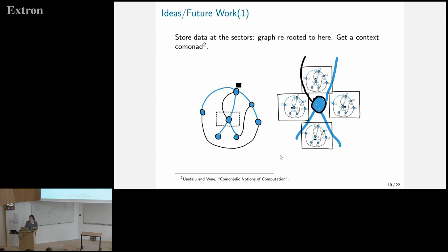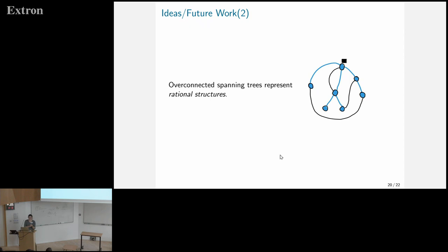The other idea is not necessarily to do with planarity but with over-connected trees in general. We have trees with extra stuff attached representing rational structures, which are between inductive and co-inductive structures. Rational structures may be cyclic — if you go along them you may go forever — but they have a finite representation. They have exactly a spanning tree representation, so you can work on them nicely: just work on the spanning tree and keep the extra stuff.